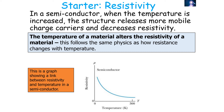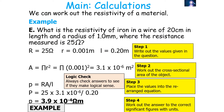Let's look at a few examples of calculating resistivity. What is the resistivity of iron in a wire of 20 centimetres in length with a radius of 1.0 millimetres where the resistance is measured to be 25 ohms? First, write out the values given. Second, calculate the cross-sectional area. Third, substitute the values into the rearranged equation. Finally, work out the answer to the correct significant figures with units. In this case the answer is 3.9 × 10⁻⁴ ohm metres, which is approximately true for a conductor.